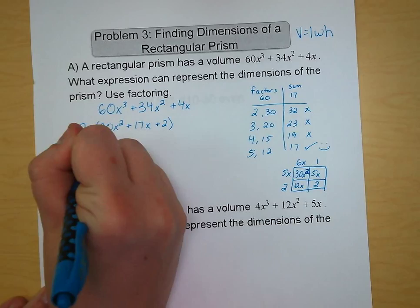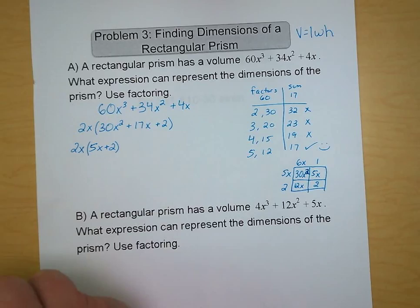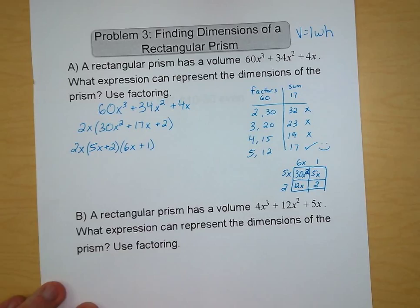So our factored form for this prism is going to be 2x times 5x plus 2 times 6x plus 1. That looks like our volume equation from the beginning — length times width times height — and they're being multiplied, giving us 3 different dimensions.